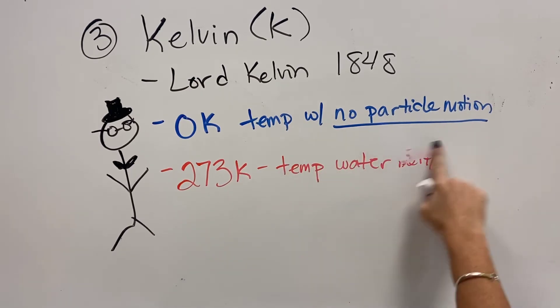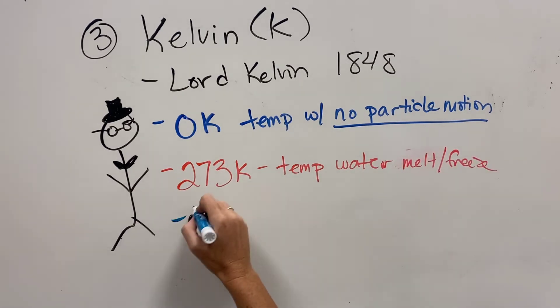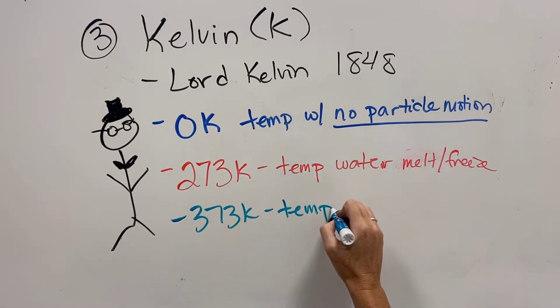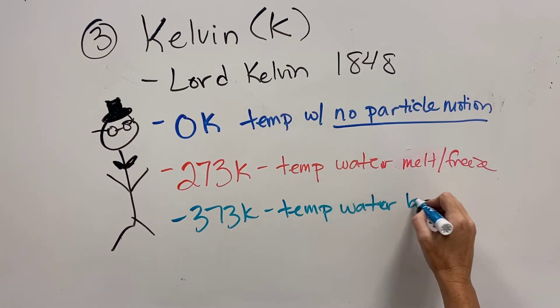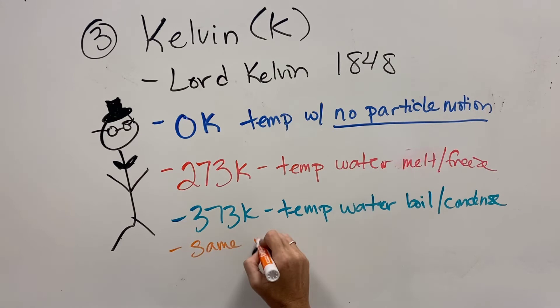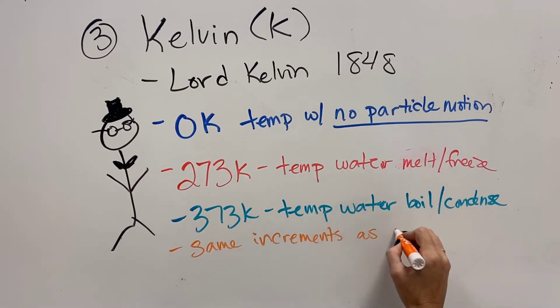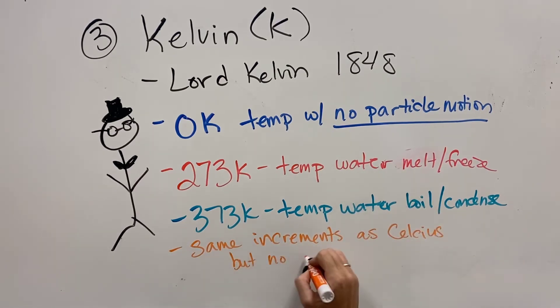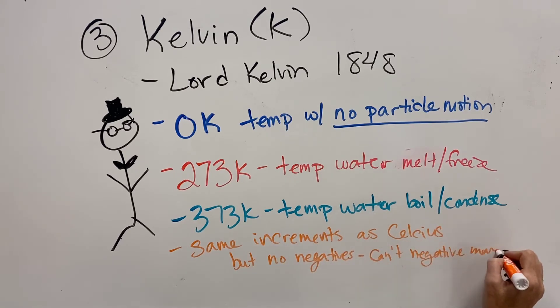Then he left the increments the same as the Celsius system. So 273 Kelvin then is the temperature that water melts or freezes. And 373 Kelvin is the temperature that water boils or condenses. That's even stranger to us to be like, oh, it's, you know, 300 Kelvin in the classroom today. That sounds pretty crazy.